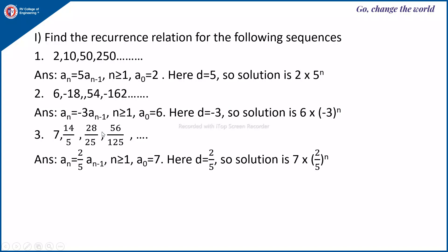For the next sequence, find the common ratio by dividing the second term by the first term: (14/5) ÷ 7 = 2/5. Therefore a(n) = (2/5)·a(n-1), n ≥ 1, with a(0) = 7. The solution is a(n) = 7·(2/5)^n. We will stop here and continue in the next video. Thank you.